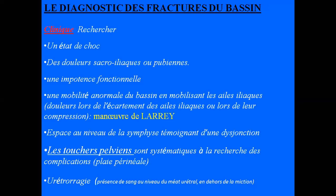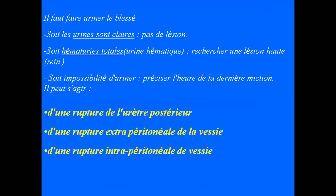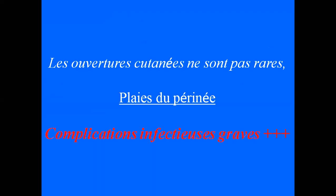Les touchers pelviens sont obligatoires à la recherche de plaies périnéales, pouvant se compliquer d'infections graves par germes anaérobies et emporter la vie du patient. Il faut bien inspecter et palper le périnée, et rechercher une urétrorragie. L'examen urinaire est obligatoire : urines claires — pas de lésion ; hématurie totale — penser à un traumatisme rénal ; impossibilité d'uriner — suspecter une rupture de l'urètre postérieure, une rupture extra-péritonéale ou intra-péritonéale de la vessie, avec douleurs abdominales et syndrome péritonéal.